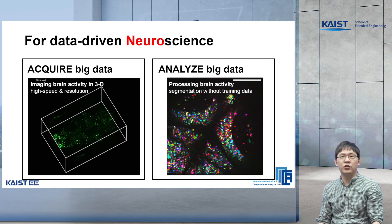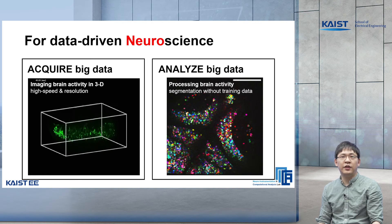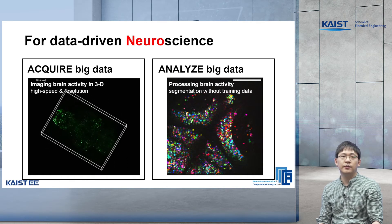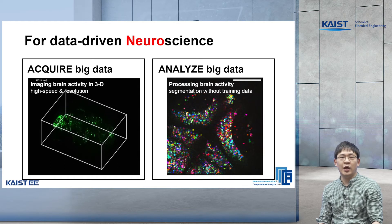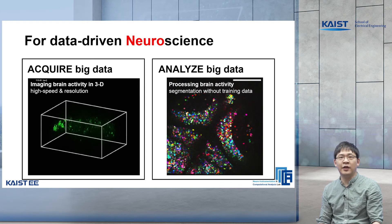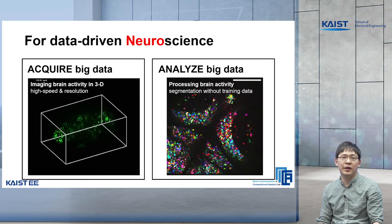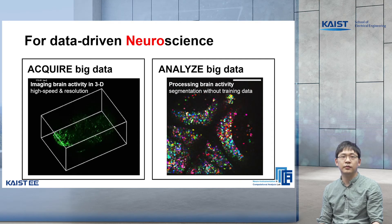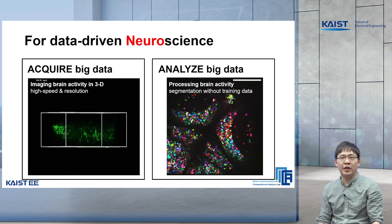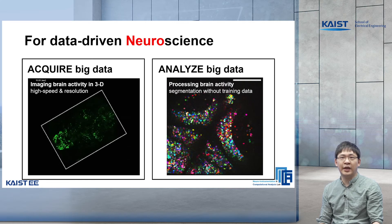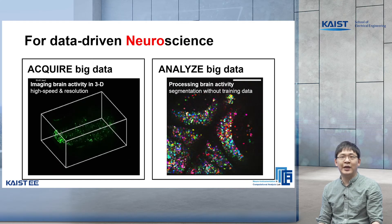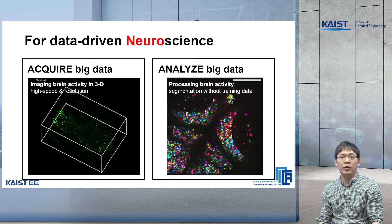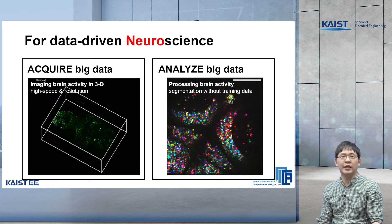Here we have some visual examples. The video on the left shows the brain activity of a small fish. Using our technology, we image the brain activity in 3D, at high speed, and at single neuron resolution. The image on the right is an image processing outcome from such data. We devised a neural network that can automatically segment all the neurons in the video, which does not require any training data.